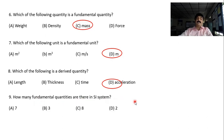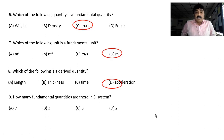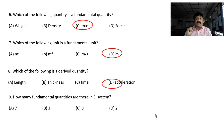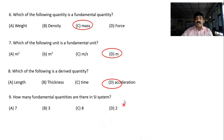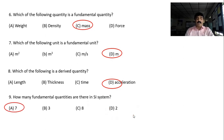How many fundamental quantities are there in the SI system? This is very simple. In the SI system there are 7 fundamental quantities. Note that the two angles — plane angle and solid angle — are additional supplementary units. So the SI system has 7 fundamental quantities.